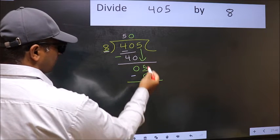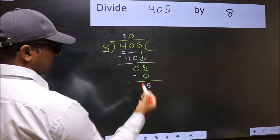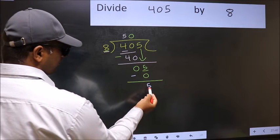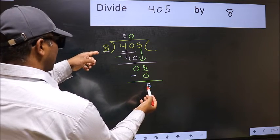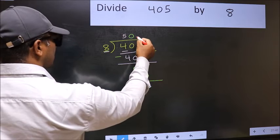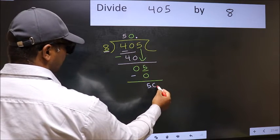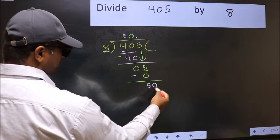Over here, we did not bring any number down. And 5 is smaller than 8. So now you can put dot and take 0. So 50.